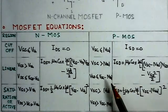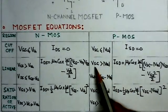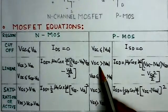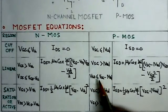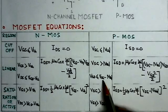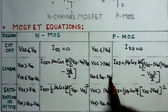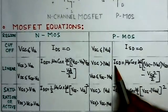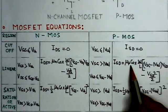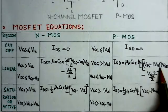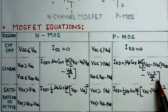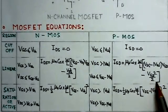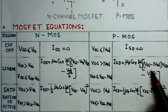Now, if we see here for the PMOS, the similar equation here says VSD should be greater than V threshold magnitude and VSD should be less than VSD minus V threshold magnitude. This will be the linear region for PMOS and the current ISD is given by mu PCOX W by L, VSD minus V threshold, VSD minus VSD whole square divided by 2.